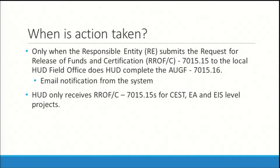HUD does not take any action on the 7015-16 until the 7015-15 is submitted to the HUD Field Office by the responsible entity. HUD Field Staff are notified when the 7015-15 is submitted via email notifications from the system. HUD staff only receive the 7015-15 for categorically excluded subject to 58.5, environmental assessment, and environmental impact statement levels of review. HUD does not process the 7015-15 for exempt or categorically excluded not subject to levels of review.